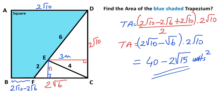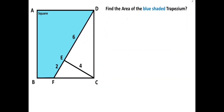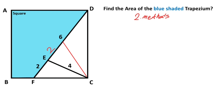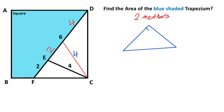That was the first method. Now we will calculate the area using the second method. First of all, let's draw a median like this — these two parts must be equal. So two units are left here and this part must equal four units. This length is also four units. Recall that if we have a right triangle and draw a median, these three parts must be equal to each other.